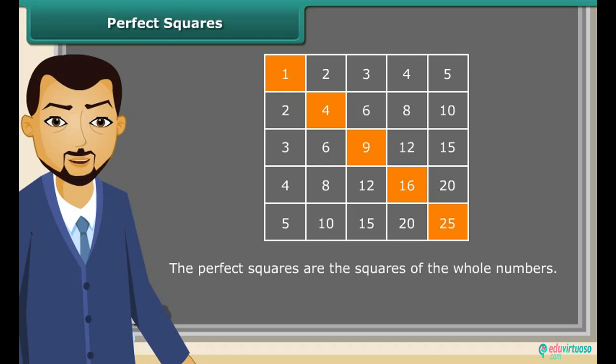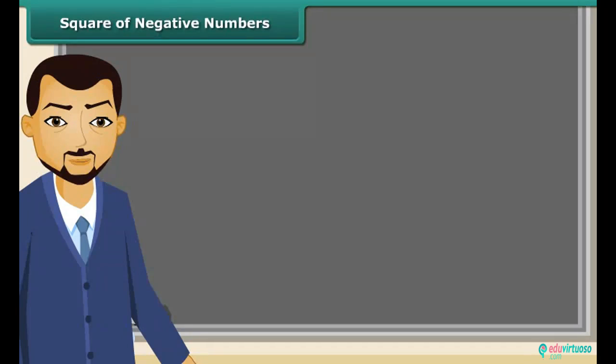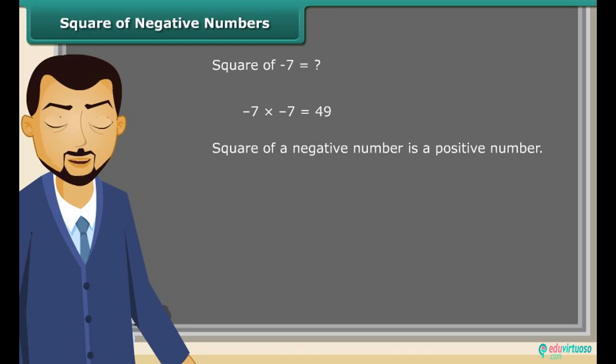The perfect squares are the squares of the whole numbers. Can we think of the square of a negative number? Yes, why not? Negative numbers can also be squared. See, when we square a negative number, we get a positive number. Suppose we have both same positive and negative number. If we square both of them, the result will be the same. That was really interesting thing to know. Let us know about square roots now.